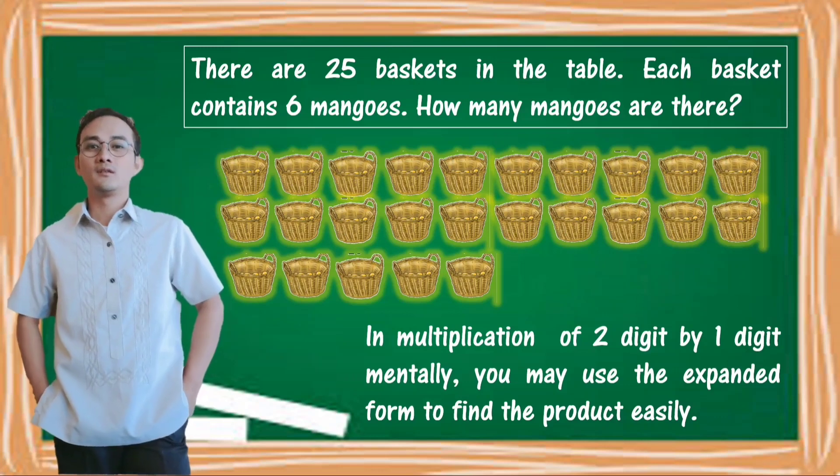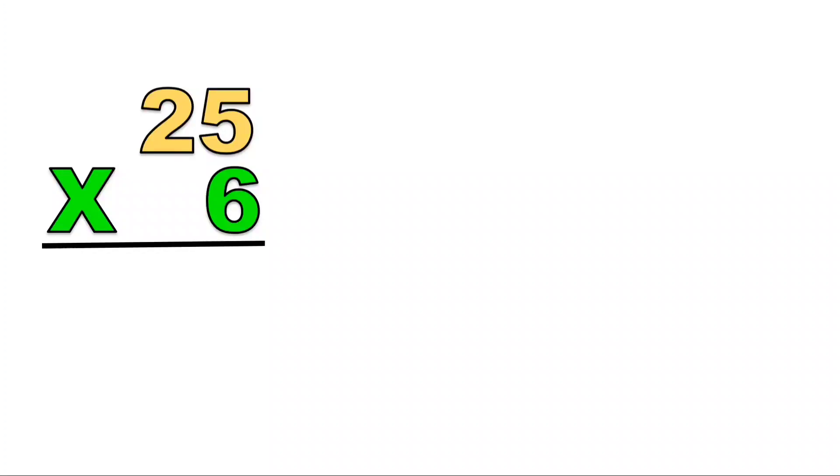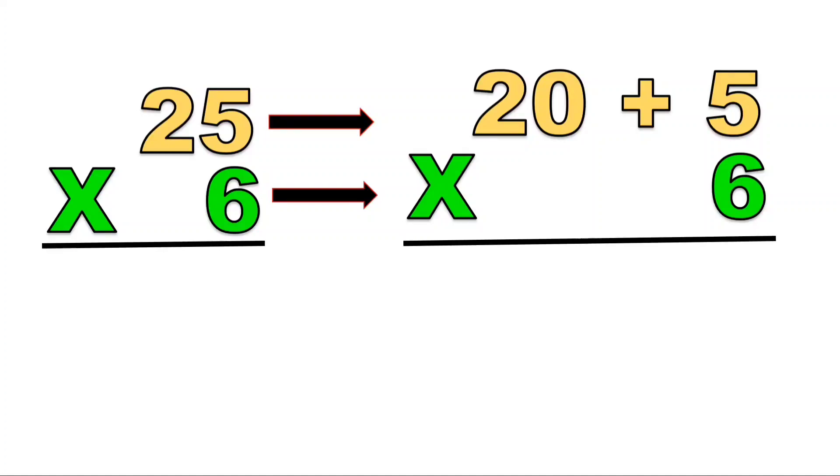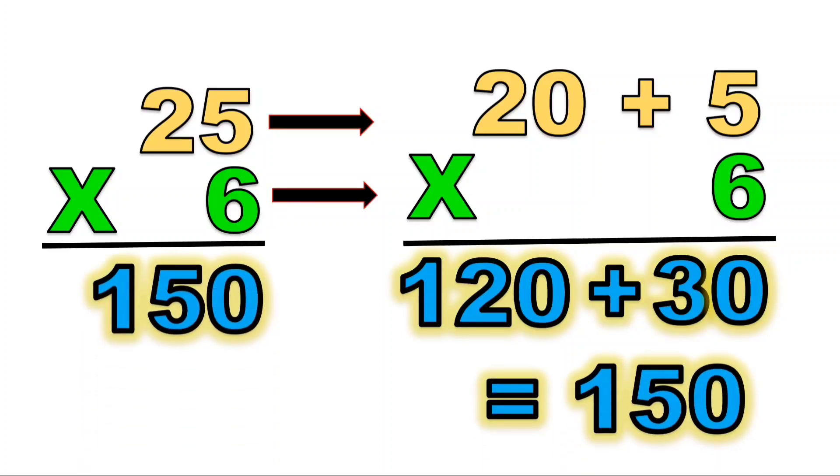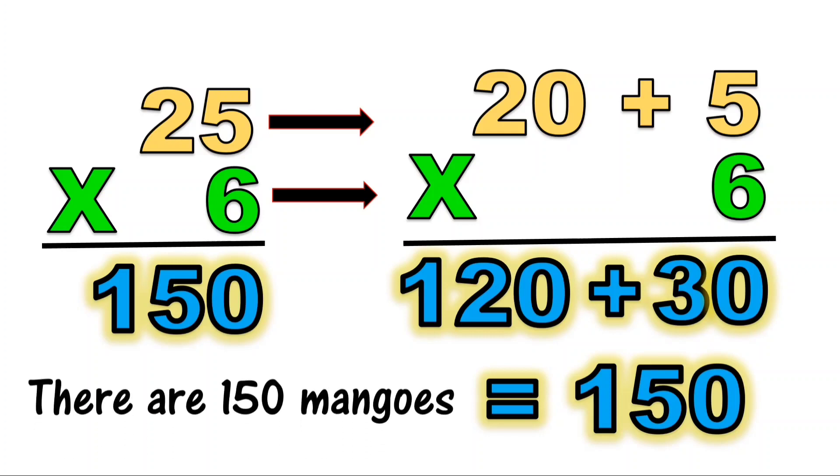In multiplication of 2-digit by 1-digit mentally, you may use the expanded form to find the product easily. 25 times 6: The expanded form of 25 is 20 plus 5. 6 times 5 equals 30. 6 times 20 equals 120. 120 plus 30 equals 150. There are 150 mangoes.